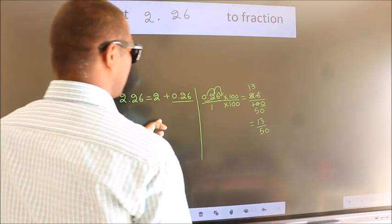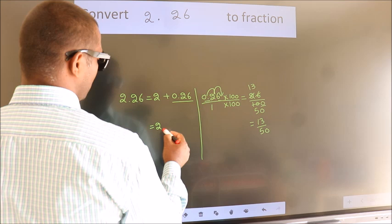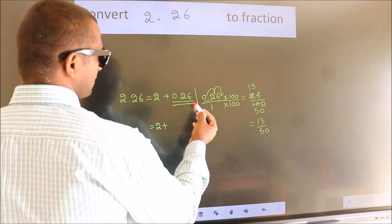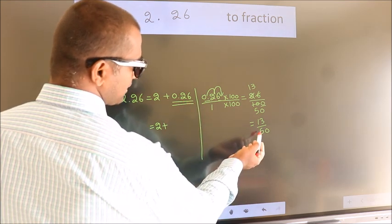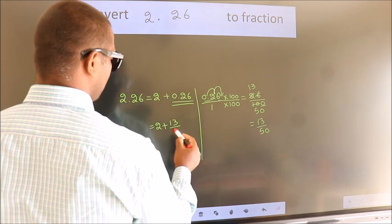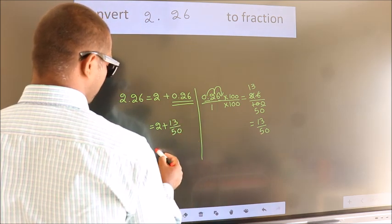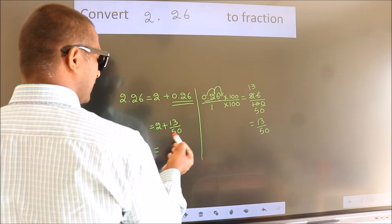Now here, 2 plus, in place of 0.26, we write this fraction 13 by 50. So 2 plus 13 by 50.